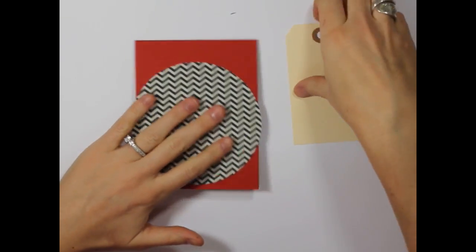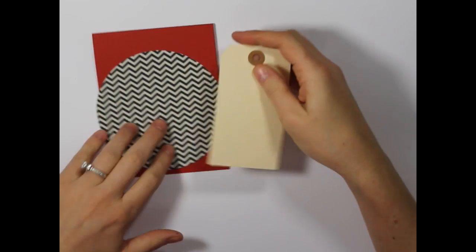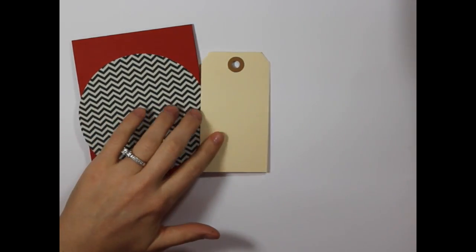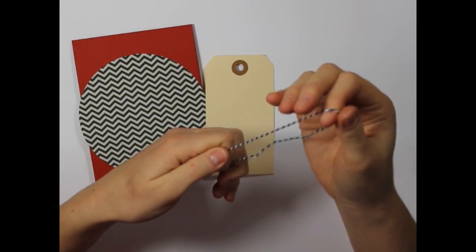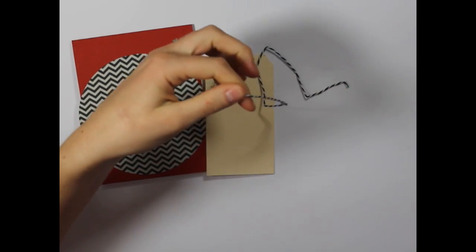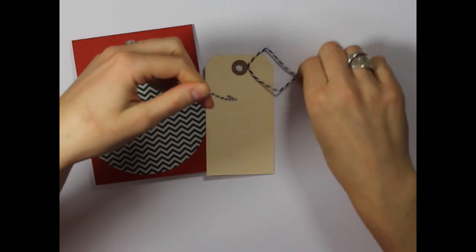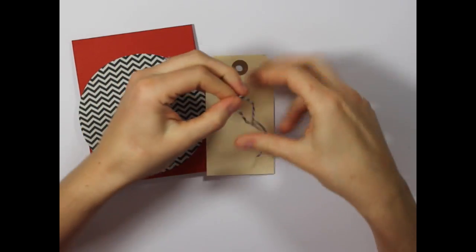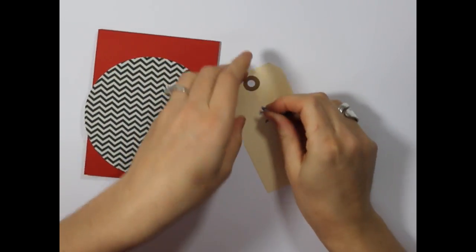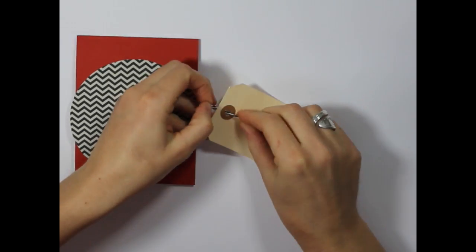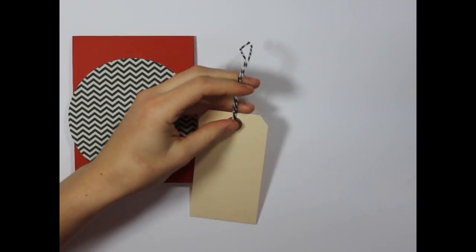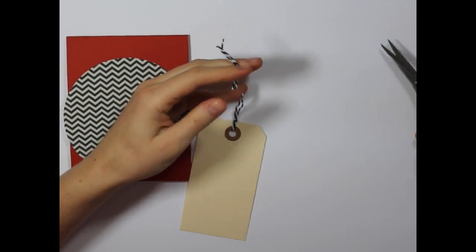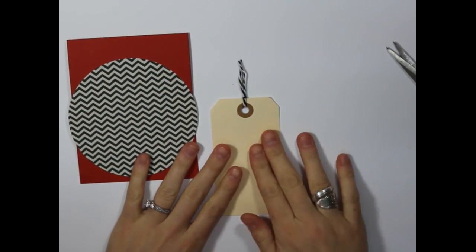So now that we have this, I'm going to start working with our parcel tag. I have some black and white baker's twine. I'm just going to fold this in half and put it through the hole in our parcel tag, and then snip those in there. At this point we can go ahead and adhere the tag to the card.